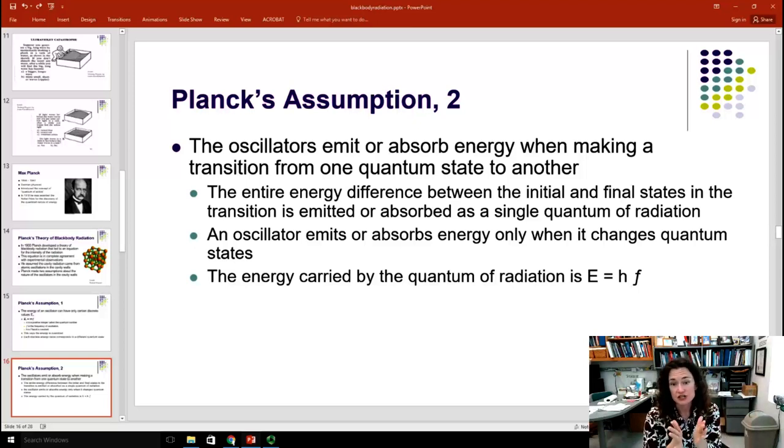Because energy is conserved, you can't jump from one energy state to another without getting that energy from somewhere if you're going up or emitting that energy if you're going down in energy. So, the energy difference here that corresponds to the difference between the initial and the final energy states is either emitted or absorbed, depending on whether you're going up or going down, by a single quantum of radiation.